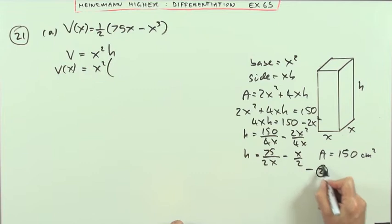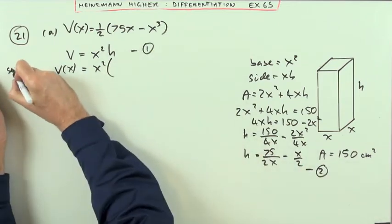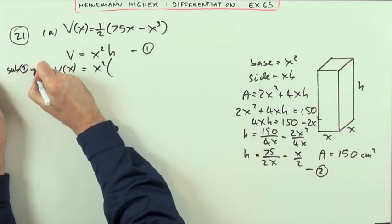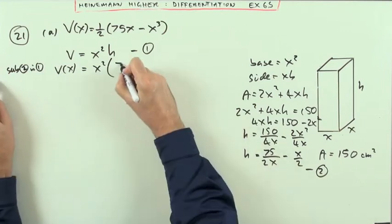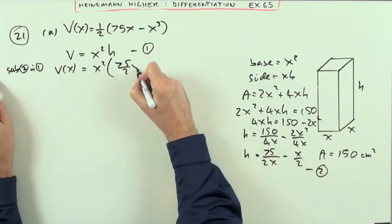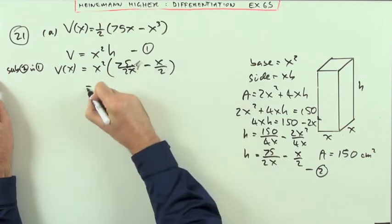So I'll call that 2 because I'm going to call that 1. So now what I'm going to do is substitute 2 in 1. So instead of h I write this, 75 upon 2x minus x upon 2.